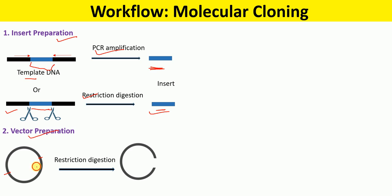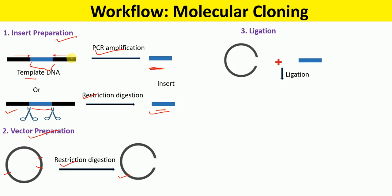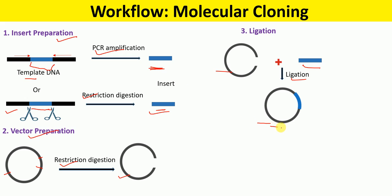After preparing the insert, the next step is to prepare the vector. The circular vectors are linearized by using suitable restriction enzymes to open the vector. After preparing the inserts and the vector, these linearized vector and inserts are ligated using suitable ligating enzymes, and that results in the formation of a molecular clone as shown here.